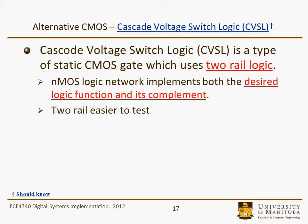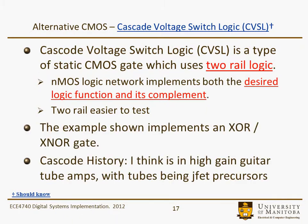It is a type of static CMOS gate which uses two-rail logic, so that means it has A and A-bar, for example. The NMOS logic pull-down section, or network, implements both the desired logic function as well as its complement. One of the things you might take away is that two-rail logic is easier to test because you have both the value and its complement. The example we're going to look at basically implements an XOR as well as the XNOR gate.